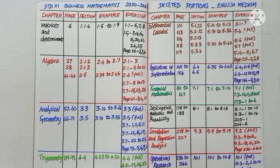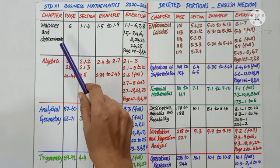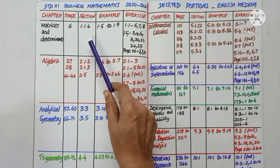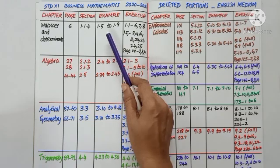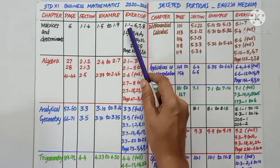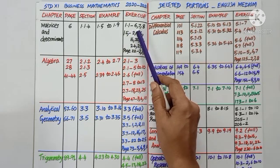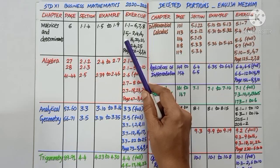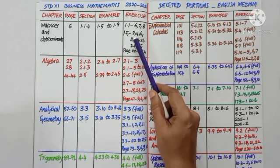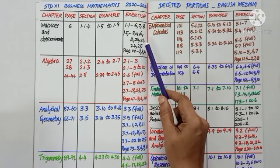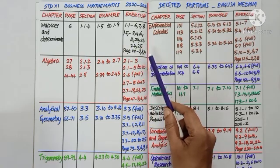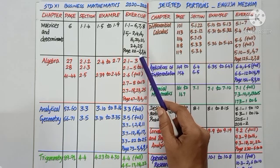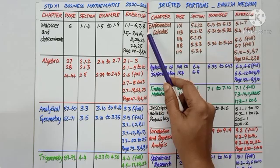Chapter 1: Matrices and Determinants. On page number 6, section 1.1.4 is deleted. The related examples 1.5 to 1.9, and in exercise 1.1, question numbers 6, 7, and 8 are deleted. In objective type exercise 1.5, question numbers 2, 4, 6, 16, 20, 21, 24, and 25 are deleted. And in miscellaneous problems on page number 22, question numbers 2, 3, and 4 are deleted.